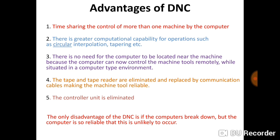The second advantage is greater computational capability for operations such as circular interpolation, tapering, and more. Since DNC consists of a centralized computer system, that system has greater computational capability compared to an individual CNC machine. This means you can easily perform circular interpolation, parabolic interpolation, hyperbolic interpolation, and tapering compression.